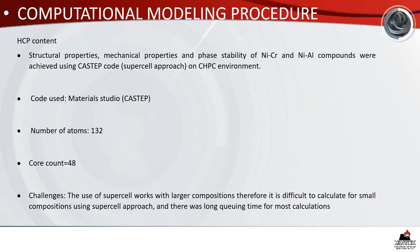The structural properties, mechanical properties, and phase stability of nickel-chrome and nickel-aluminium compounds were achieved using CASTEP code supercell approach on an HPC environment. The code used was Material Studio, specifically CASTEP. The number of atoms was 132 and the core count was 48. One challenge was that the supercell approach works with larger compositions, making it difficult to calculate small compositions. There was also a long queuing time for most calculations.